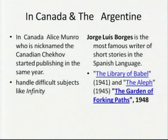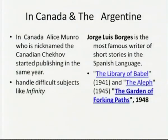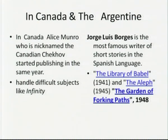In Canada, we have the great Alice Munro, whose nickname is again 'the Canadian Chekhov,' known for how she handles difficult subjects. Jorge Luis Borges, whom we had come across in past lectures, is the most famous writer of short stories in the Spanish language. His short stories took on a distinctive form of magic realism — collections like 'The Library of Babel' in 1941, 'The Aleph' in 1945, and 'The Garden of Forking Paths' in 1948. We can call them poems, we can call them novels — they are a different form altogether that he had experimented with.